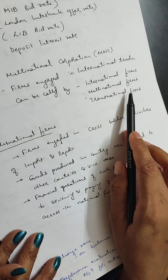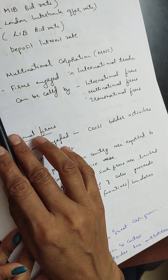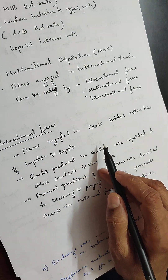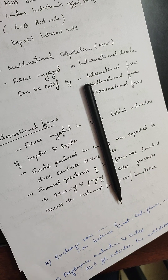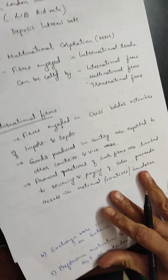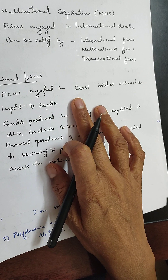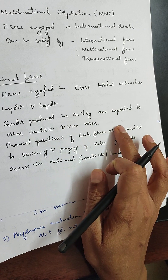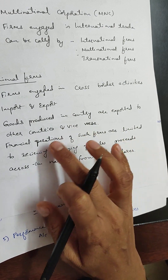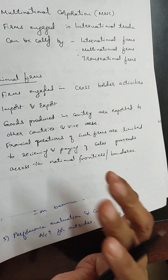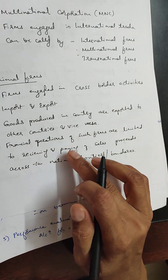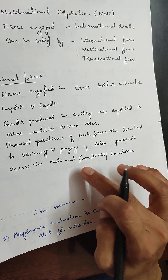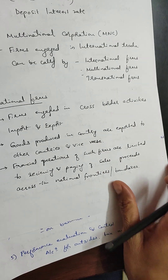Multinational corporations — also called international firms, multinational firms, and transnational firms — are firms engaged in cross-border activities. International firms are engaged in cross-border activities of import and export; goods produced in one country are exported to other countries and vice versa. Financial operations of such firms are limited to receiving and paying off sales proceeds across national frontiers.